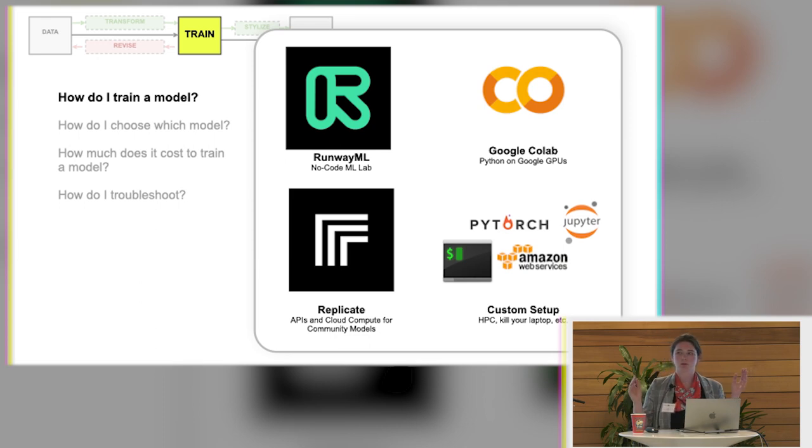Replicate, I only recently learned about, but this is APIs and cloud compute for community models. So this is like basically a wrapper for different model code and allows you to use their infrastructure, but then also kind of be more customizable with your workflow pipelines. And then there's all kinds of custom setups using, you know, PyTorch and Jupyter notebooks and AWS. You could also try to kill your laptop. I know lots of people that have trained their own style GAN models on a laptop computer and it can take, you know, a month, but power to them. You know, some people it's more about the process and the struggle and the labor that's involved than necessarily efficiency. So whatever floats your boat, depending on what your, you know, objectives are and your needs for customizability.